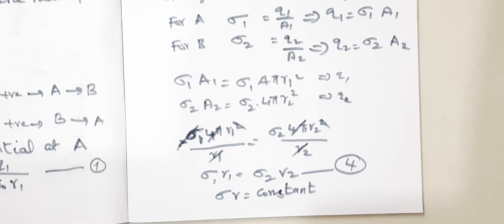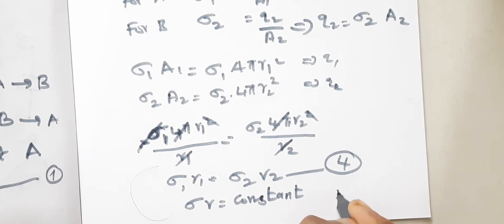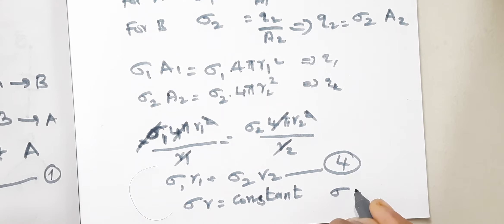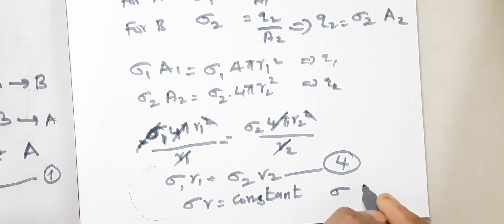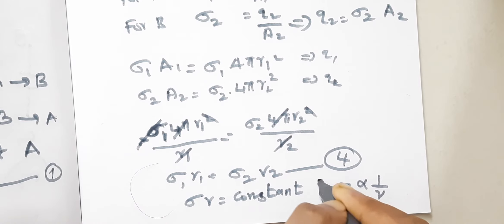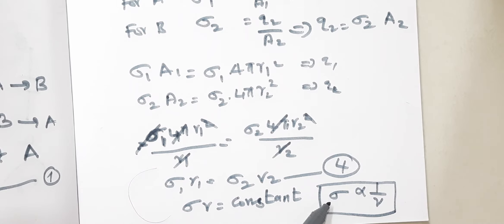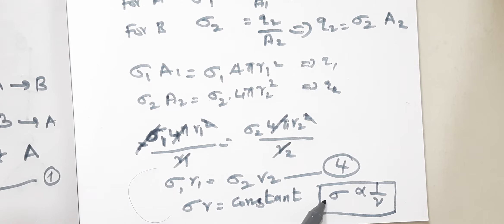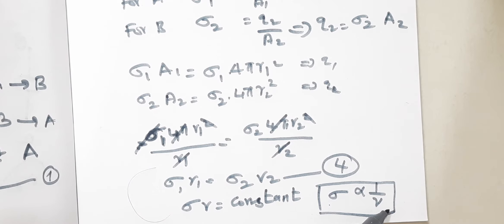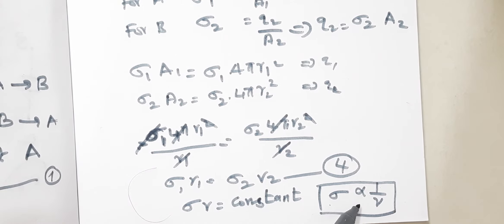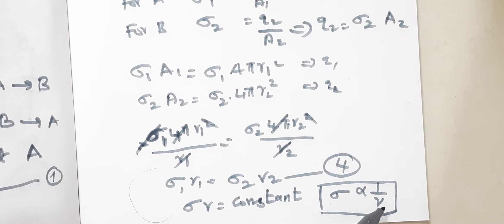From σ1·r1 = σ2·r2, we can conclude that σ × r = constant, which means σ = constant / r. Therefore sigma is proportional to 1/r. Surface charge density is inversely proportional to the radius of the sphere. For a smaller radius, the charge density will be more; for a greater radius, the charge density will be smaller.